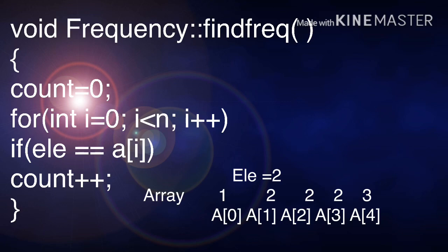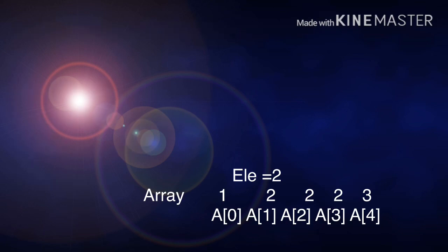Again, i value will be increased. Then it will be compared with the array elements. It will keep on repeating until the for loop ends. By the end of the loop, the count value increased to 3. So total number of times 2 is present in an array is 3 times. Now count value is 3.